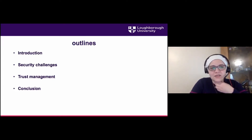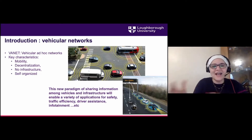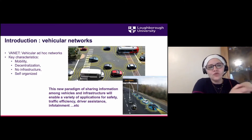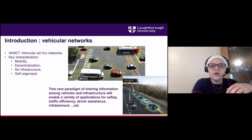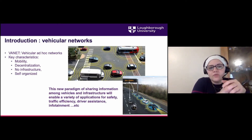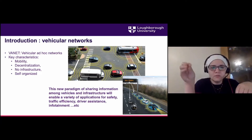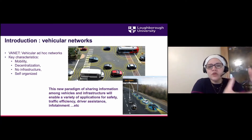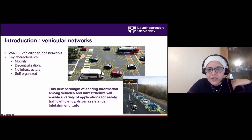Vehicular networks are also called VANETs — Vehicular Ad Hoc Networks. At the end of the day, it's an ad hoc network: self-organized, no fixed infrastructure, with mobile nodes — but instead of generic nodes we have cars. Cars can communicate with each other, and they can also communicate with specific nodes that are part of the infrastructure — fixed points along roads that exchange information with cars.